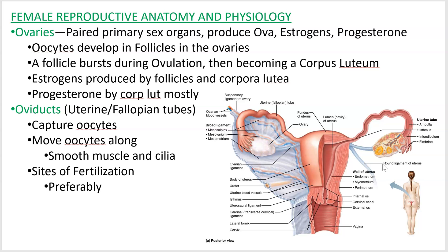The ovaries make ova — ova are eggs, or ovum is a single egg — and they make those cells through the same process as sperm cells, a combination of meiosis and mitosis called oogenesis, which we'll get to later. They develop in little structures called follicles inside the ovaries. The follicles get bigger and bigger over the course of 28 days until they rupture, the oocyte comes out, and that follicle turns into a corpus luteum, which continues to make estrogen.